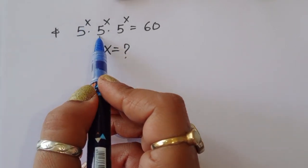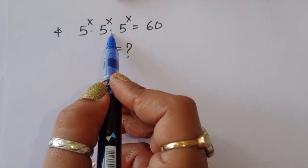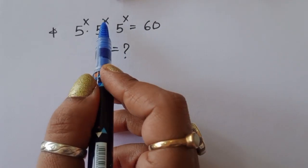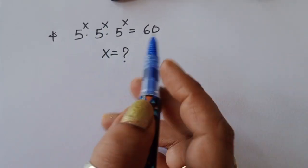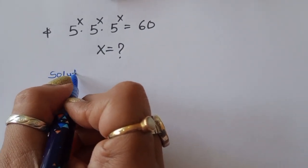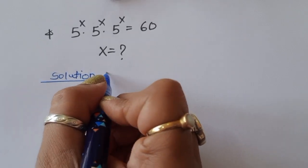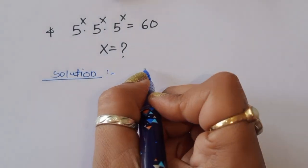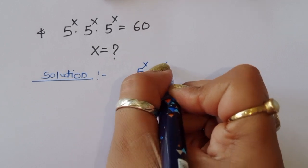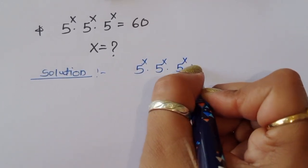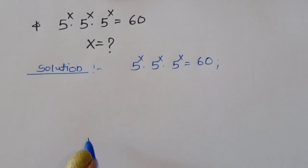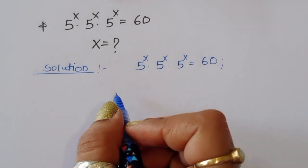Given 5^x times 5^x times 5^x is equal to 60, we have to find out the value of x. Let's see the solution — how we can find out the value of x. So 5^x times 5^x times 5^x is equal to 60; this is the question.